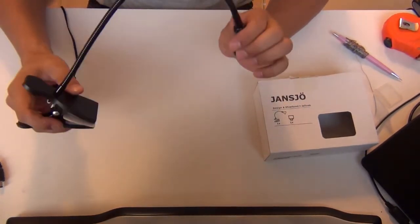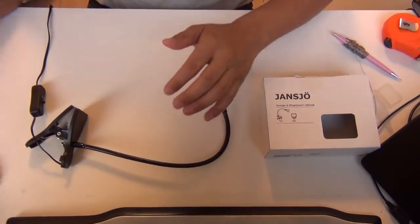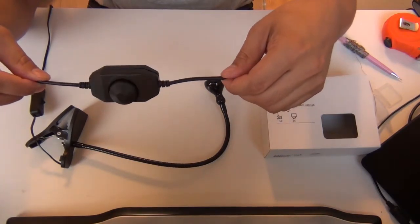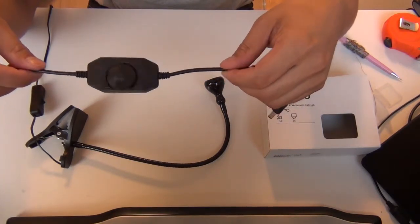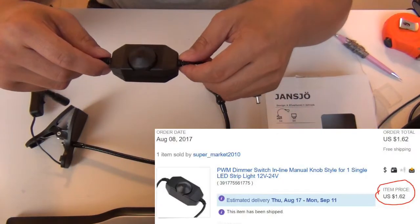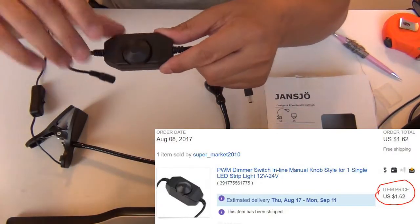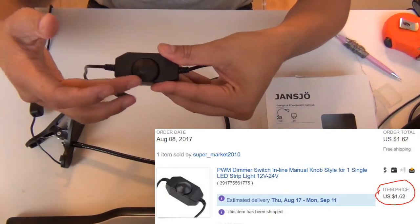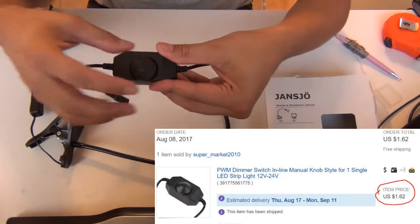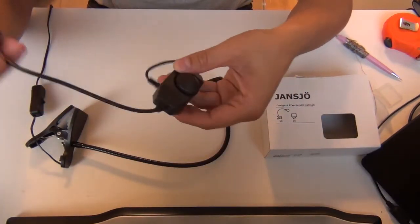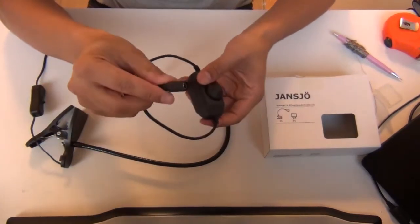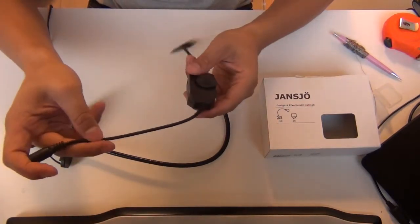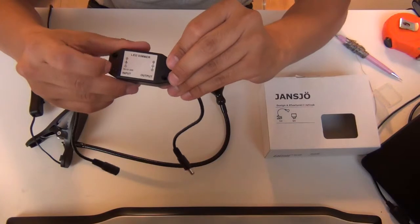For that we're going to make use of this little device. I bought this one on eBay and it was around one or two dollars. The idea is that you use this control knob to adjust the brightness, and you hear the click that's used as a switch button.